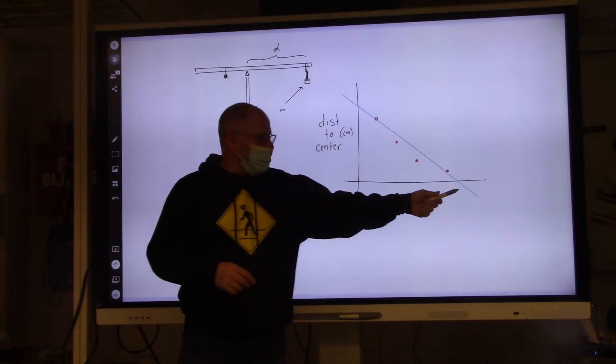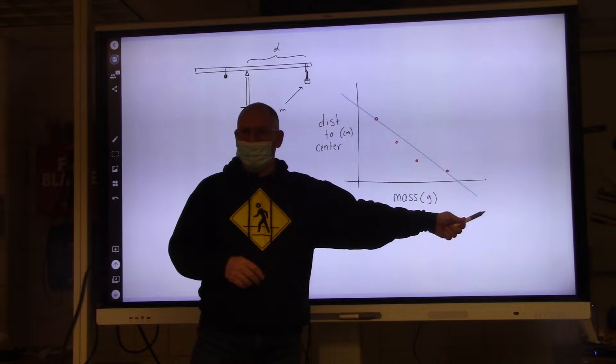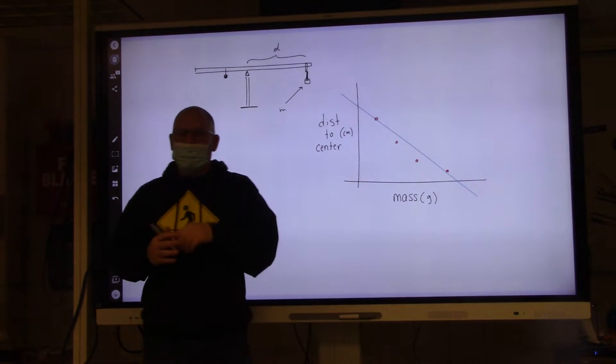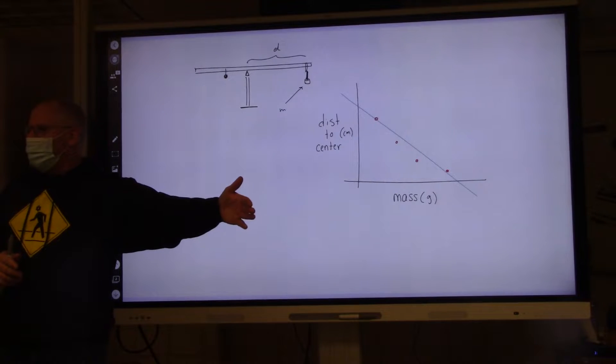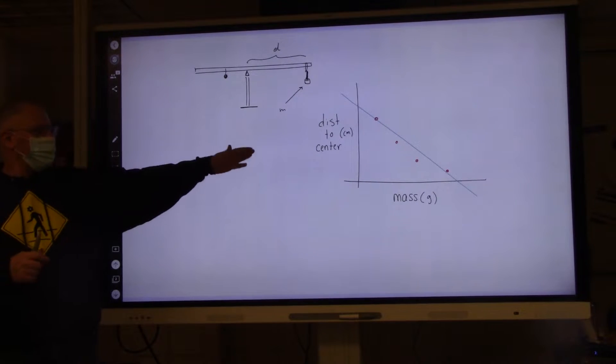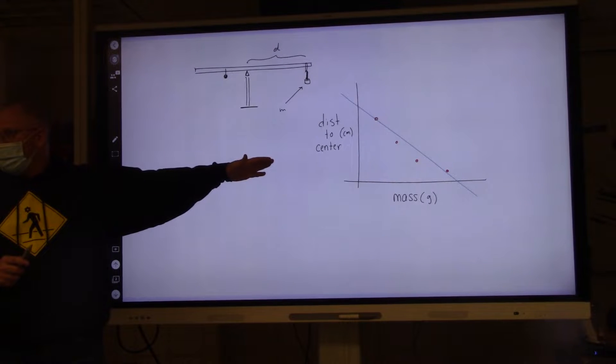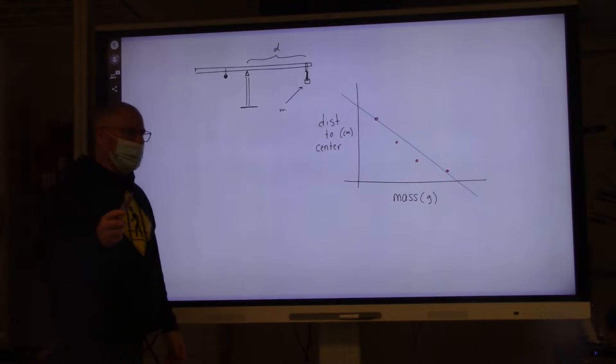What about if this crosses the horizontal axis? What does that mean? This thing can't be balanced. You can't get the thing to balance if you're on the other side of the center. So does this make sense to us? No. Also, I have another problem.